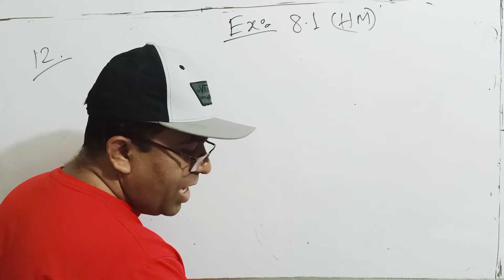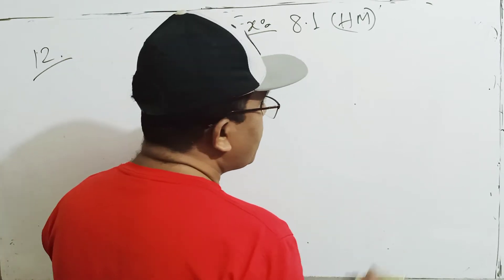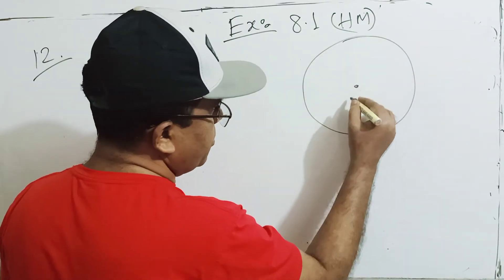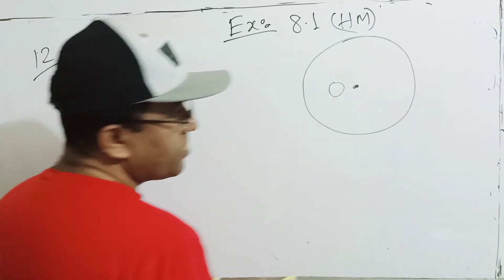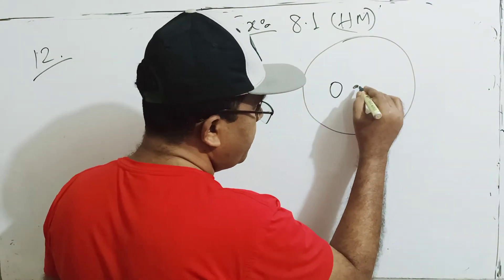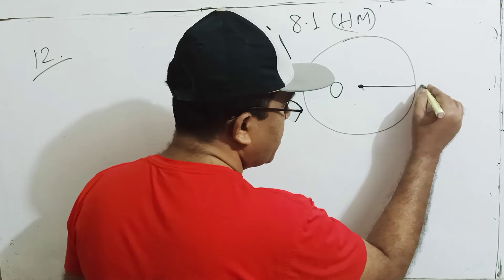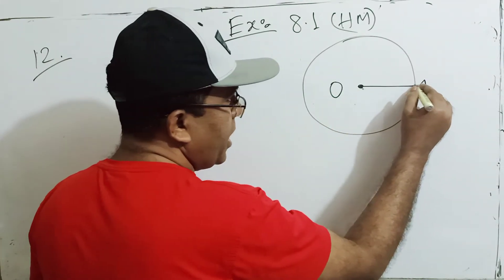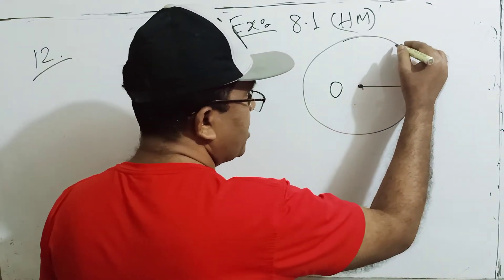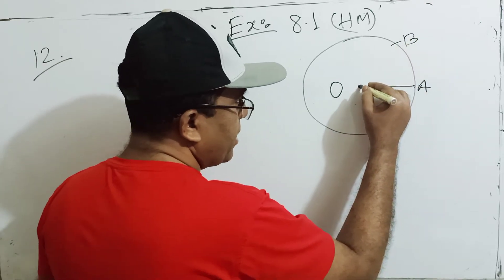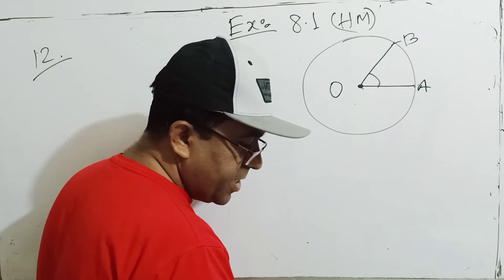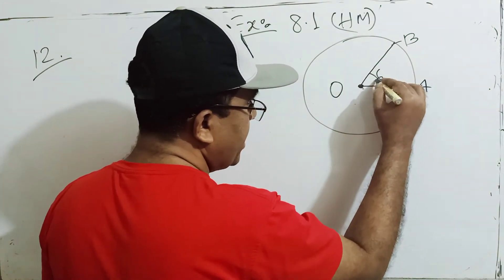Find the diameter of the circular track. Let O be the center of the circular track, A and B be two points. This traversal takes 36 seconds; B is the endpoint. The angle AOB, theta, equals 60 degrees.